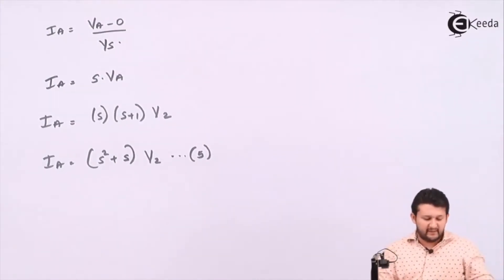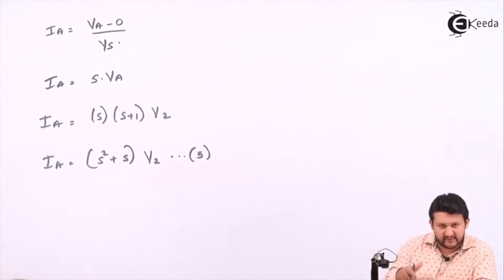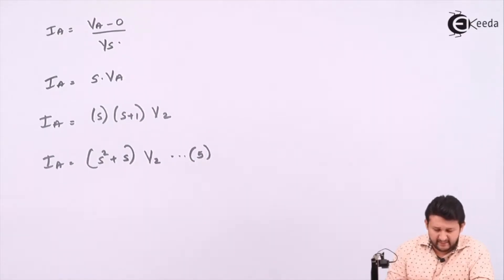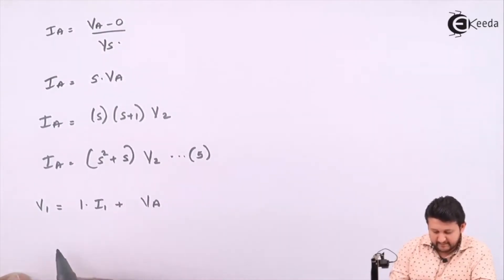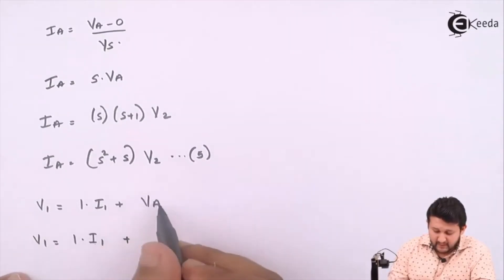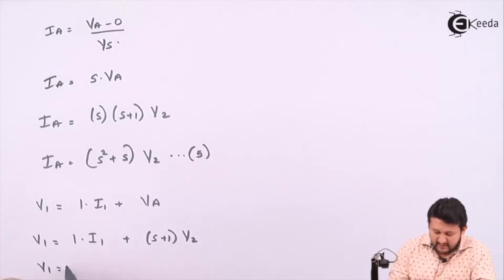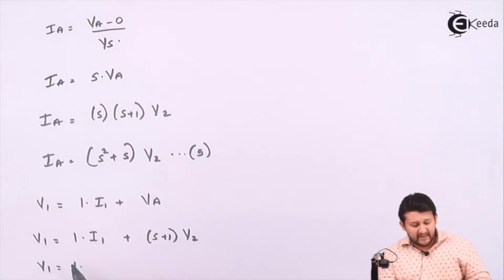Now let's go for the horizontal part. For the horizontal part, the equation I need for V1 will be 1 times Ia plus Va. So V1 equals 1 times Ia plus Va. I1 is the total current, and since I1 splits into two branches, I1 will be the addition of both currents — that means I1 equals Ia plus Ib.